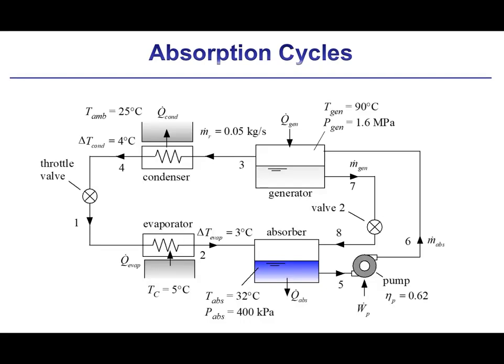This is a very simple absorption cycle. The generator operates at 90 degrees Celsius and 1.6 megapascals. 50 grams per second of saturated vapor that is nearly pure ammonia is drawn from the generator at state 3 and used in the refrigeration cycle. So it passes first through the condenser where it is liquefied before passing through the expansion valve and then finally being evaporated in the evaporator and fed to the absorber.